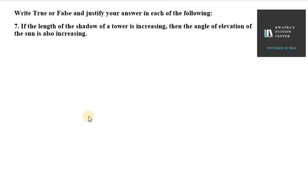Hello everyone, let's start with exercise 8.2 of NCRD exemplars. In this it says write true or false and justify your answer. Question number 7 is: if the length of the shadow of a tower is increasing, then the angle of elevation of the sun is also increasing.